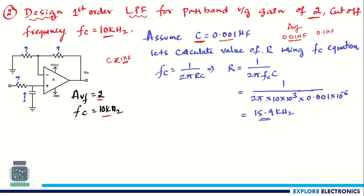With C assumed as 0.001 μF and fc = 10 kHz, use fc = 1 / (2π RC) to calculate R. Rearranging gives R = 1 / (2π × fc × C), which evaluates to approximately 15.9 kΩ. That is the value of R.